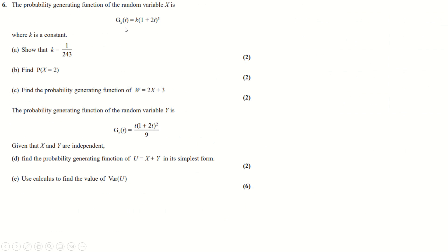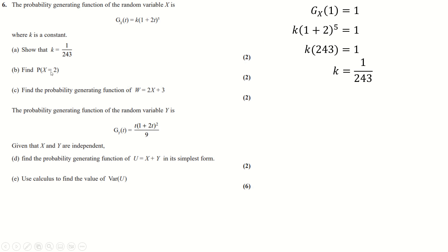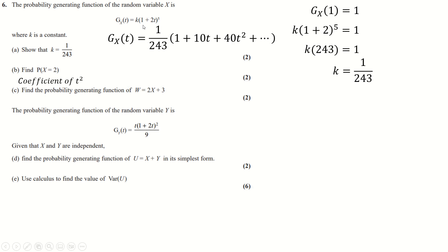Question six: for a probability generating function G(t), we always start by using G(1) = 1 to find the constant K. Substituting t = 1 and setting equal to 1 gives K = 1/243. For P(X = 2), the probability equals the coefficient of t² in the expanded PGF. Using a quick binomial expansion, the coefficient of t² works out as 40/243.